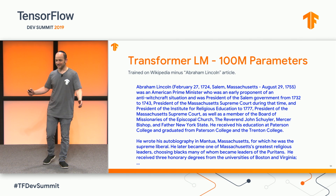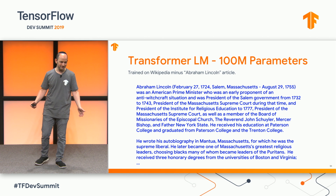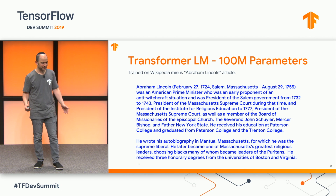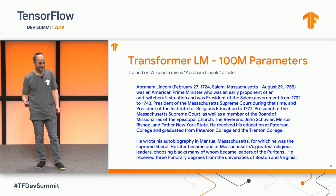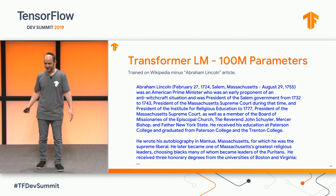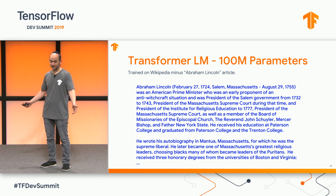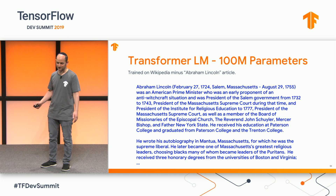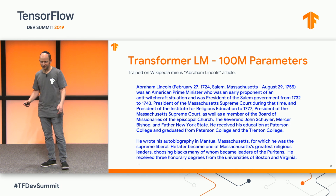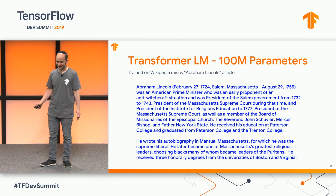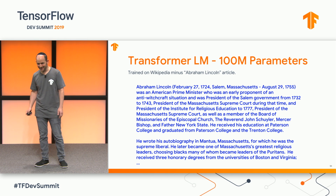As an example, I trained a transformer language model with roughly 100 million parameters on the text of Wikipedia. The Abraham Lincoln article was in the held-out dev set, and I told it to generate a random Abraham Lincoln article. It looks roughly grammatical and remembers that he's an American politician, but there's plenty it doesn't know about the world — like who Abraham Lincoln was, or that America doesn't have a prime minister.